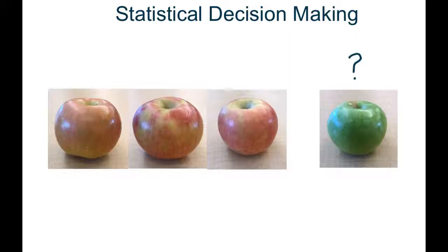Just looking at the apple, what would you conclude — would you reject the null hypothesis or fail to reject it? Hopefully it's pretty obvious that this green apple is a Granny Smith and nothing like the three Fuji apples from the population. In this instance, we would reject the null hypothesis. Although it is round and we'd still consider it an apple, it is different enough that we wouldn't accept the notion that it's part of the same population, the same species. So we take the null hypothesis, H-sub-zero, and we reject it.